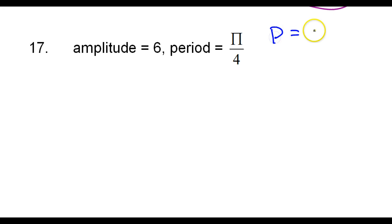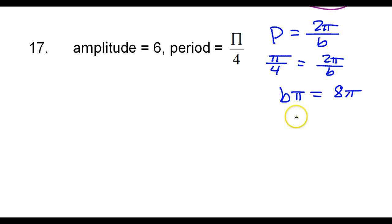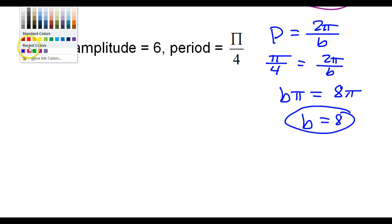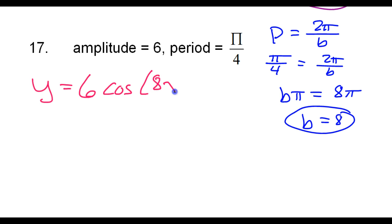Number 17. The period is 2 pi over b. That means pi over 4 equals 2 pi over b. Cross multiplying gives b pi equals 8 pi. Dividing both sides by pi gives b equals 8. So the equation is y equals 6 cosine of 8x.